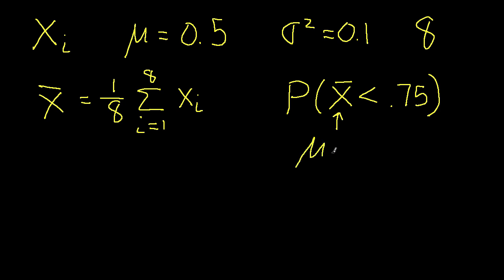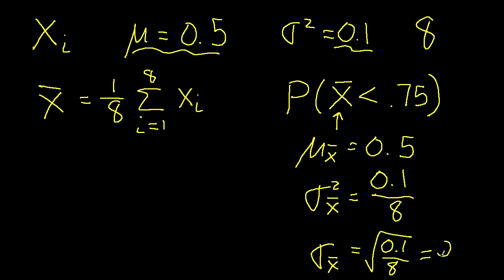I know that the mean of x-bar is going to be the mean of each of my xi's, which in this case is 0.5. I know that the variance of x-bar is going to be the variance of my xi's, which is 0.1 divided by 8, which tells me that the standard deviation of my x-bar is going to be the square root of this value, which turns out to be 0.1118.